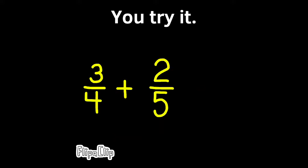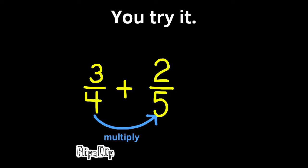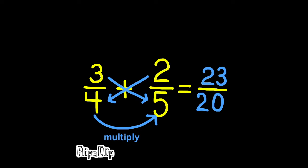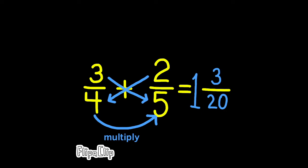Let's have you try one more: three-fourths plus two-fifths. Press pause if you need to. Let's see how you did. The first step is multiply the denominators — four times five is twenty. The second step is multiply the left numerator by the right denominator — three times five is fifteen. The third step is multiply the right numerator by the left denominator — two times four is eight. And then finally, fifteen plus eight is twenty-three, so the answer is twenty-three over twenty. That's an improper fraction, so we can turn that into a mixed number: one and three-twentieths.